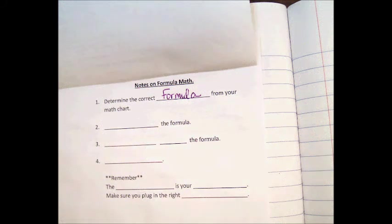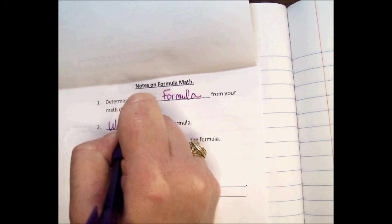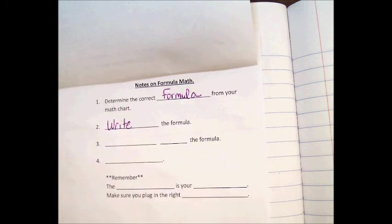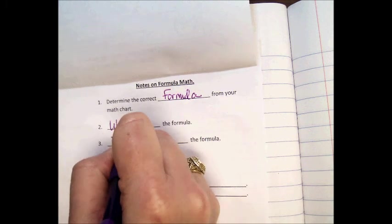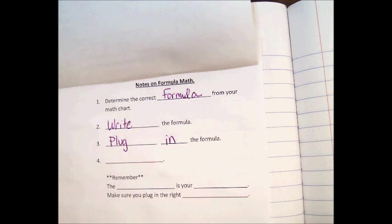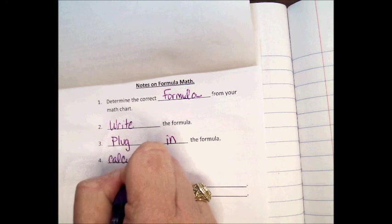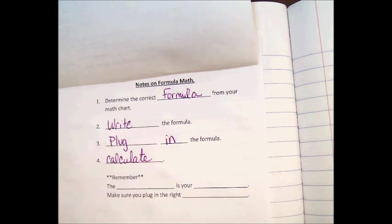Step number two, I want you to write the formula down. Do you have to write the formula down? Yes, you do. Step number three, I want you to plug in the formula with the values that are given to you in the problem. And the last step is going to be to calculate. Just do what the formula tells you to do. If the formula says multiply, you multiply. If it says divide, then you divide.